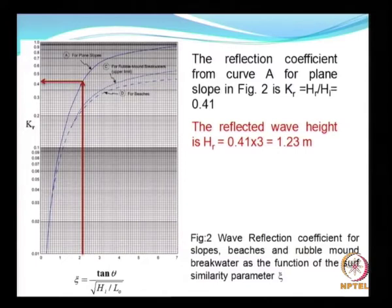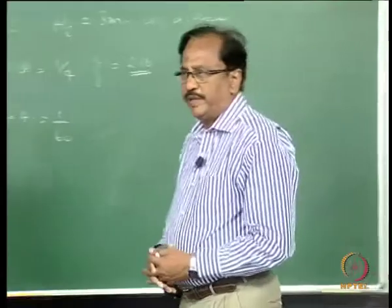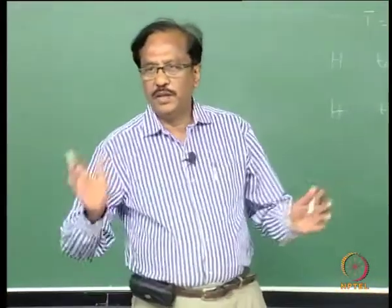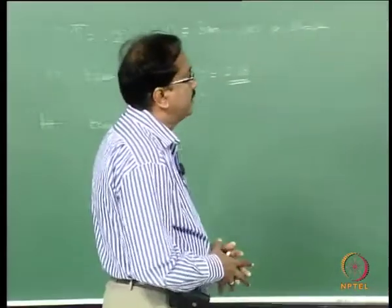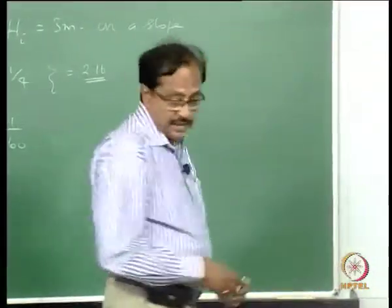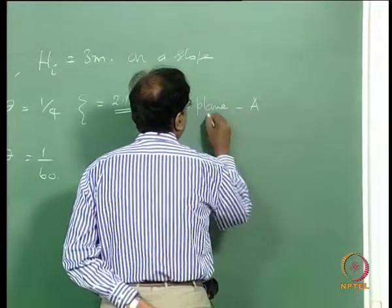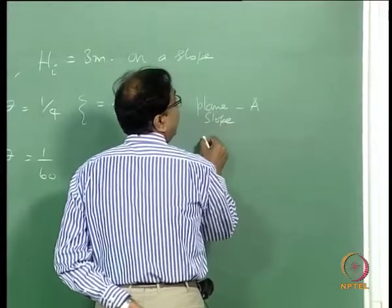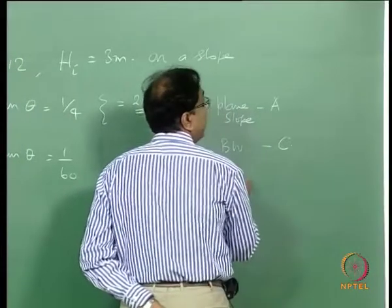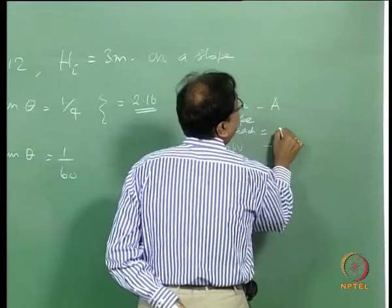The Coastal Engineering Manual, prepared by the US Army Corps of Engineers, provides most of the coastal engineering nomograms and comes in two volumes — worth referring to. In this nomogram there are three curves: curve A is for plain slopes, curve C is for rubble mound breakwaters (upper bound), and curve D is for beaches.